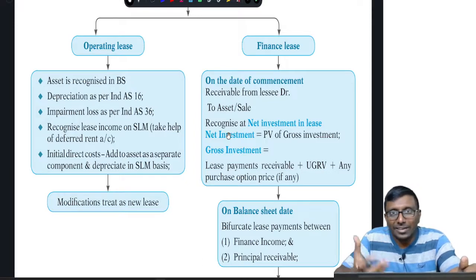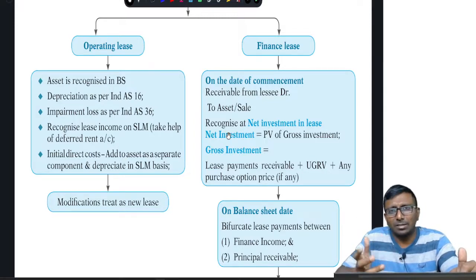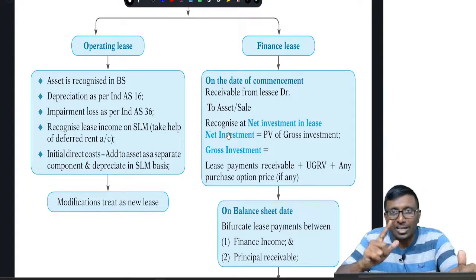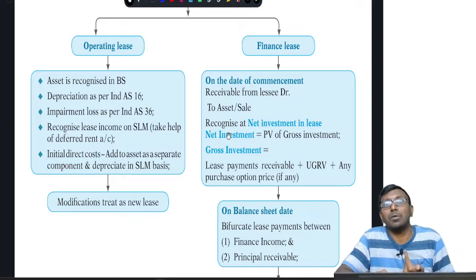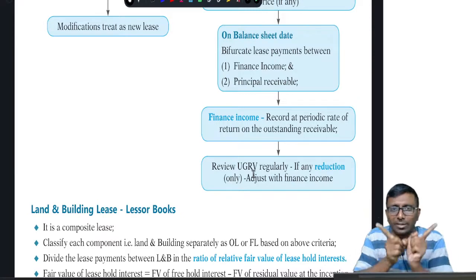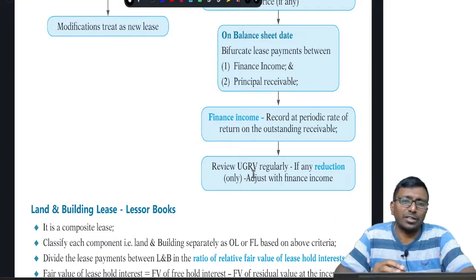When it is a finance lease for the lessor, the risks and rewards with respect to the asset are not with you, so you credit the asset. You debit the asset at the net investment in the lease. Net investment in lease is the present value of the gross investment. Gross investment is the lease payments — MLPs plus UGRV. The MLP will already include the guaranteed residual value and the option price. Every installment is bifurcated into two parts: the interest part and the receipt of the principal amount. The interest part is transferred to profit.